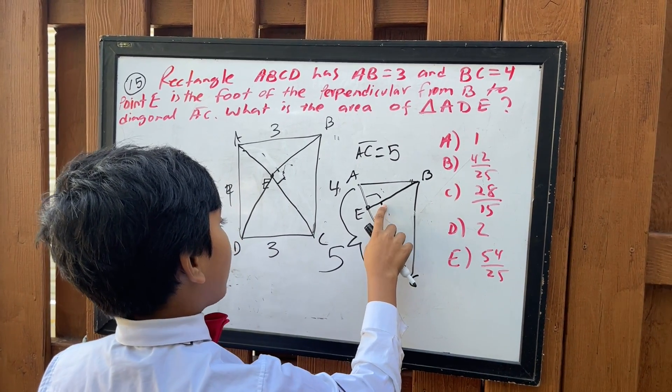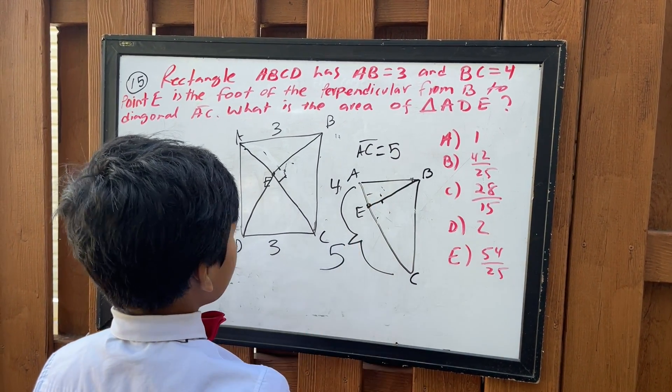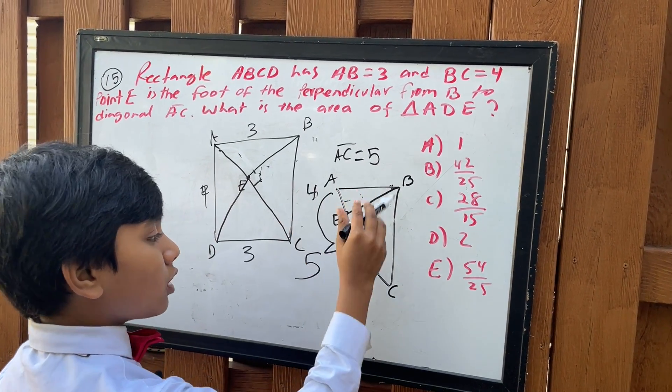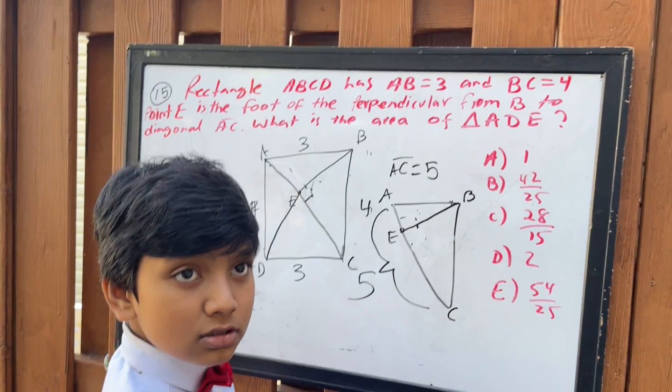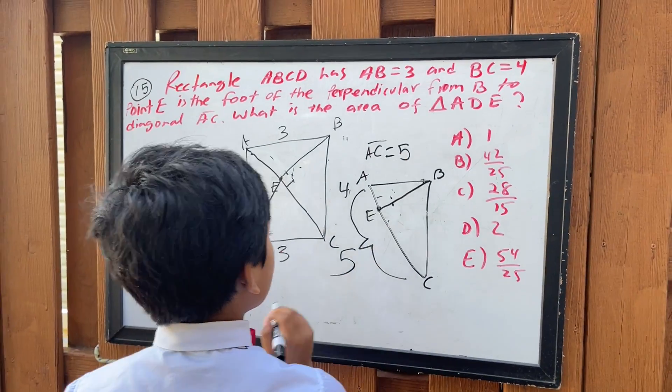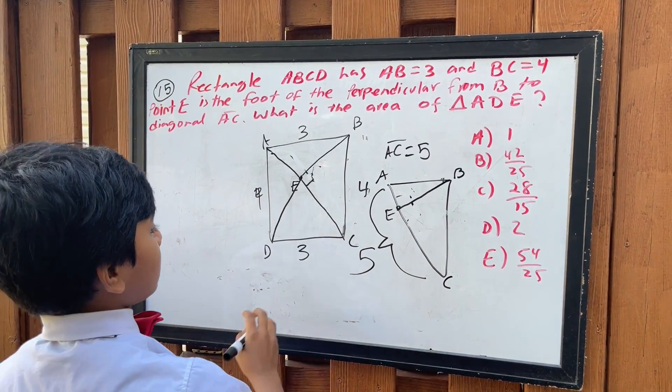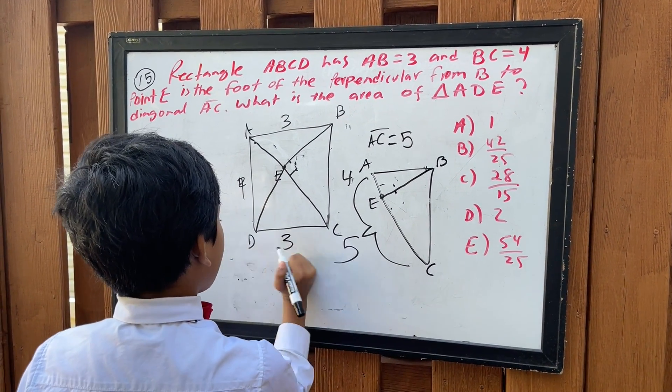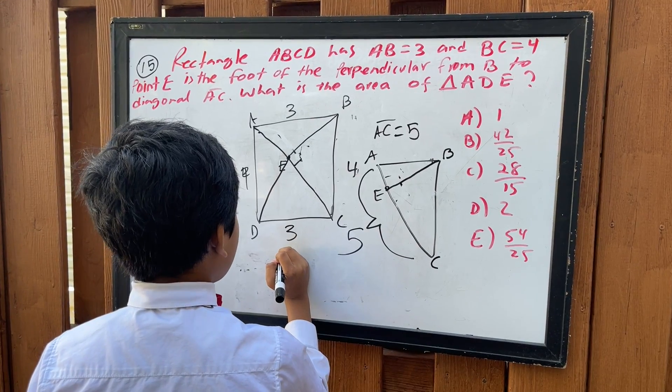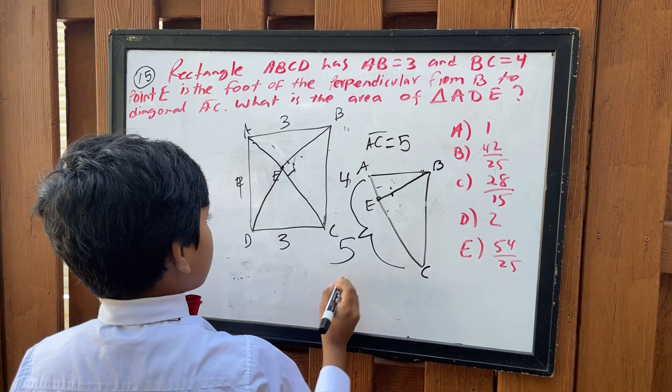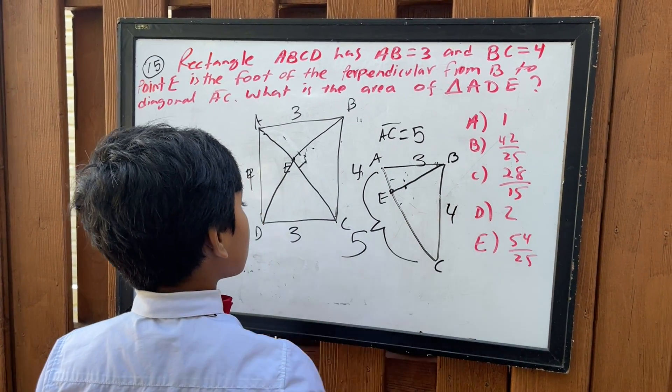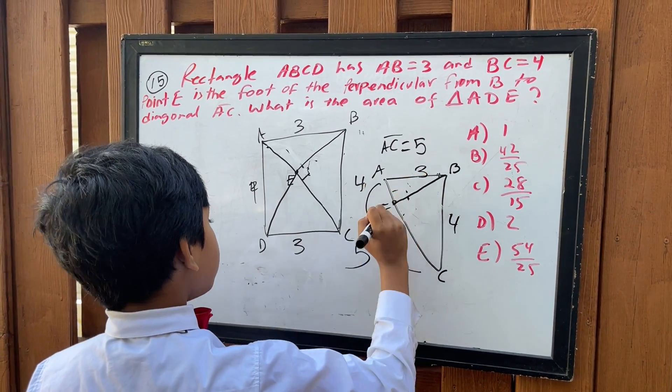So that means that ABE and BCE are both similar to ABC. So that means that, let's say that we have this proportion. So this is going to be the hypotenuse, which is three, and this is four. So for ABE, let's say that we have three, which is AB, over five, which is AC.